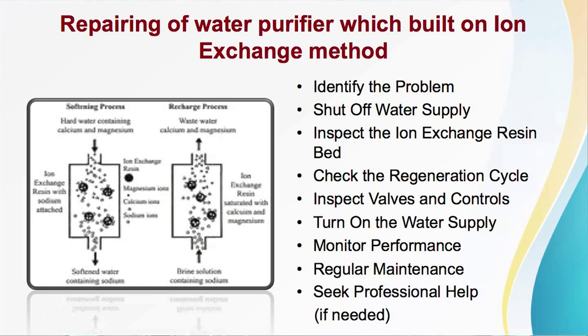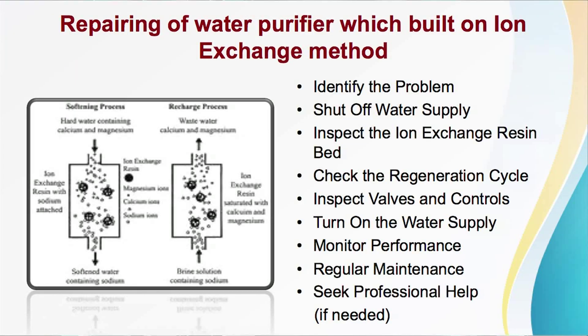The next step is inspect the valves and controls. Check the valves and controls of the ion exchange system for any signs of damage or malfunction. Replace or repair any faulty components. Then finally, turn on the water supply once you have addressed the issues and are confident that everything is properly assembled and sealed. Then monitor performance after repairing the purifier — monitor its performance over the next few days to ensure it is operating correctly and providing the desired level of water softening or purification. Perform regular maintenance on your ion exchange water purifier as recommended by the manufacturer, which may include checking and refilling the brine tank, inspecting the resin bed, and adjusting the regeneration settings.